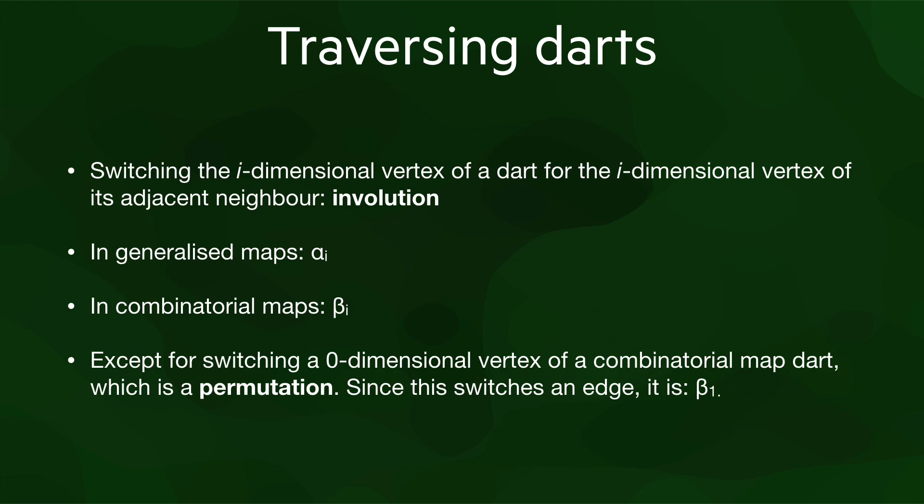In generalized maps, this is denoted as alpha i, where the i is the dimension that we're switching. In combinatorial maps, this is instead denoted as beta i.